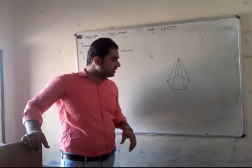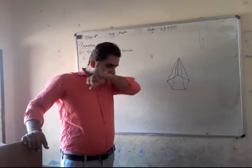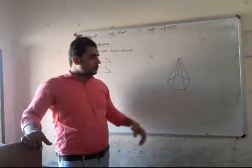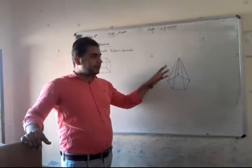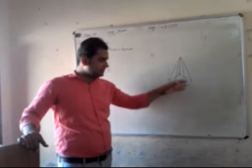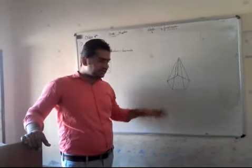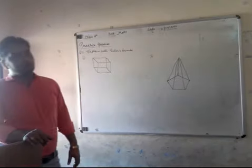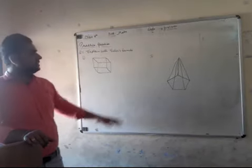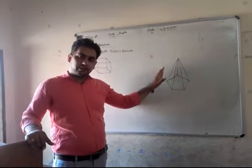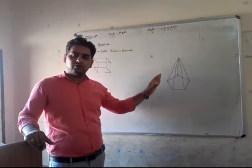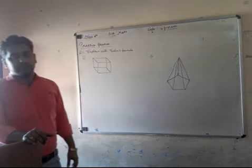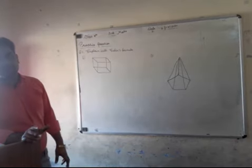Question number 2: It looks like a pentagon-based pyramid. It is called a pentagon-based pyramid shape — all the lateral faces are triangular. It is a triangle shape, and when you have a pentagon base, show the number of faces, edges, and vertices.